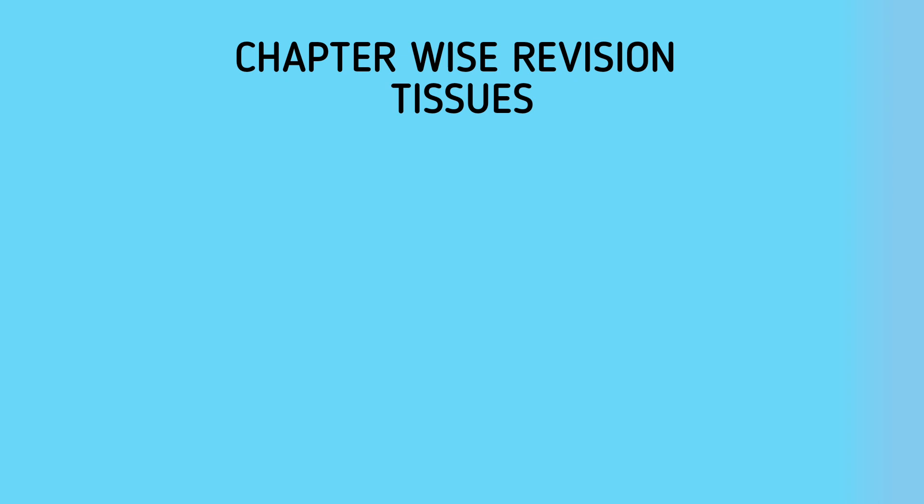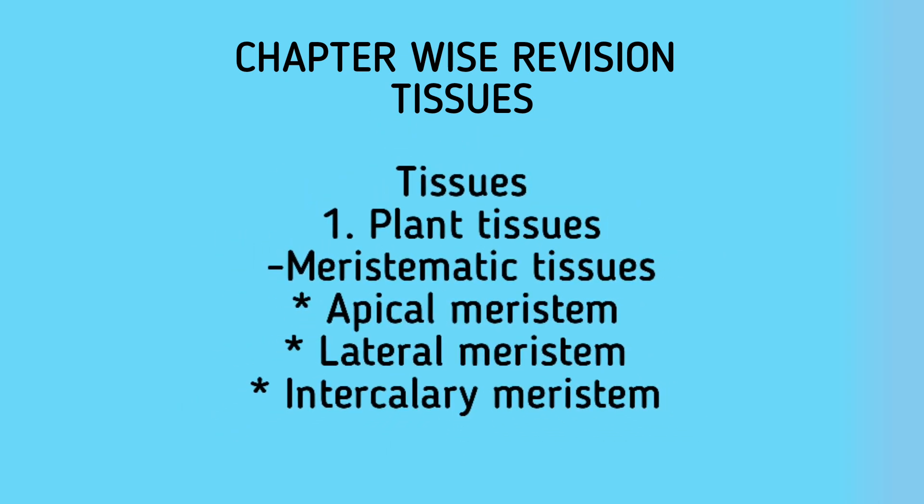The next chapter we are going to discuss is tissues. A group of cells that perform a common function are called tissues. Tissues are mainly classified into plant tissues and animal tissues. Plant tissues are mainly classified into meristematic tissues and permanent tissues. Meristematic tissues are again classified into apical meristem, lateral meristem, and intercalary meristem.